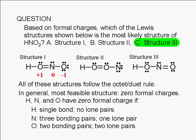The formal charges for the first oxygen, nitrogen, and the second oxygen in structure 1 are positive 1, zero, and negative 1 respectively.